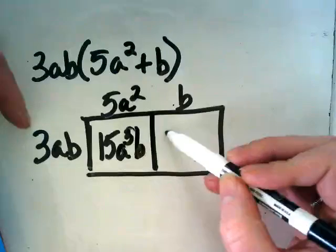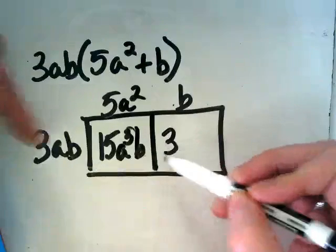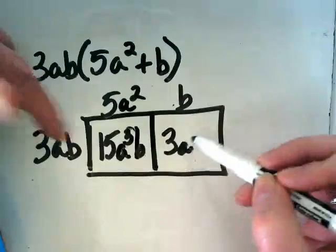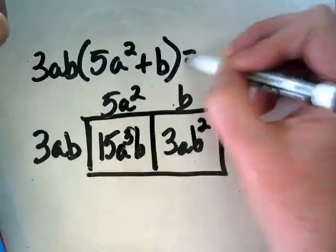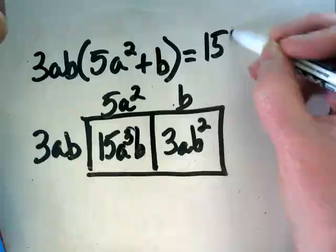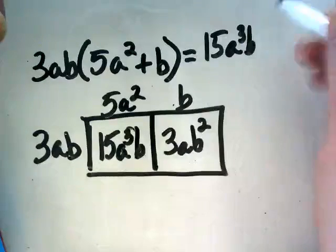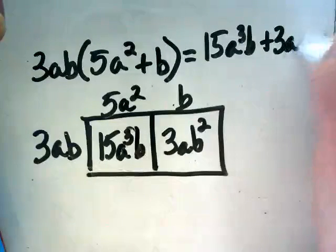And then b is by itself. And then for this box, we're going to keep the 3 and the a. And what happens to the b? 2. So that means that this equals 15a³b plus 3ab².